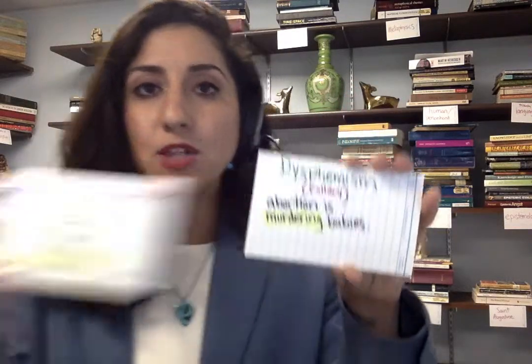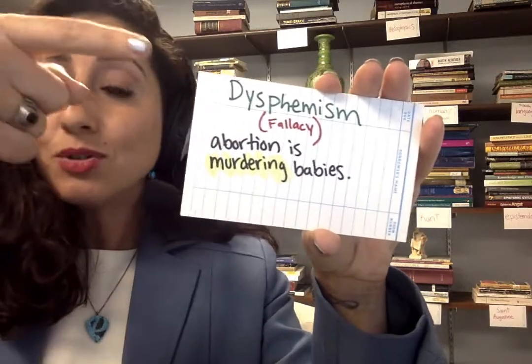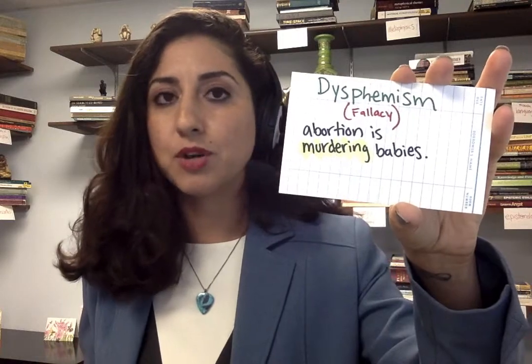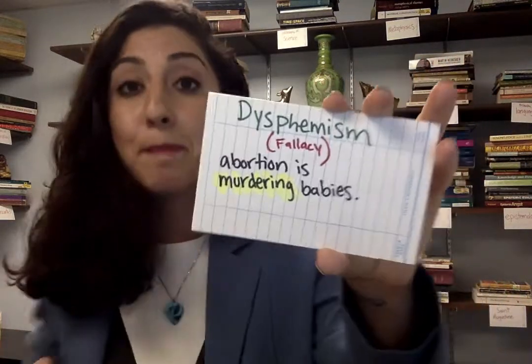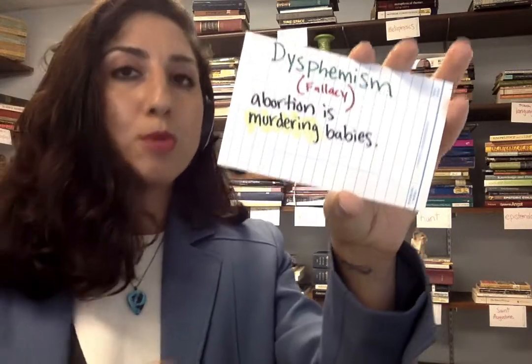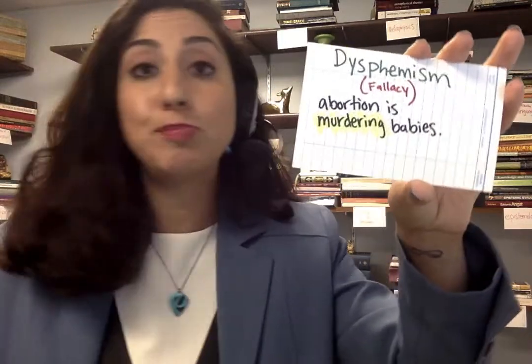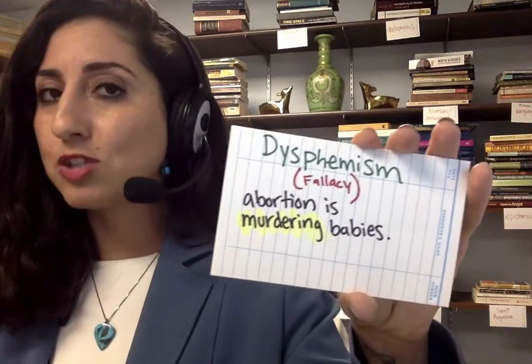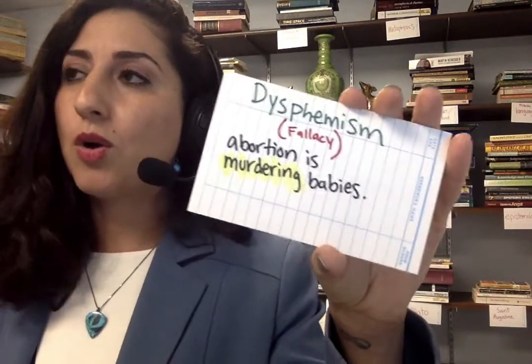The opposite of euphemism is the logical fallacy dysphemism — using premises that make something sound absolutely horrendous, so that since you wouldn't want to accept something horrendous, you draw the conclusion you're supposed to draw; you're bullied into accepting it. For example, if I want to argue abortion is wrong and immoral and should be illegal, and in my premises I describe abortion as "murdering babies" — doesn't that sound terrible? Murdering anybody, but babies — cute little innocent babies. Putting that in an argument to get you to conclude abortion is immoral or should be illegal is a dysphemism, and that's a logical fallacy.